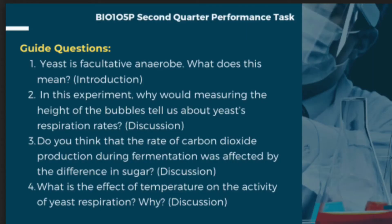Measuring the height of bubbles tells us about yeast respiration rates — that the yeast is undergoing fermentation — and it is really possible that fermentation can occur even without oxygen. The rate of carbon dioxide produced during fermentation was affected by the difference in sugar, because sugars have different fixed contents. That's why we used different types of sugar, like white and brown sugar, to see if there is a difference between them during fermentation. The effect of temperature on yeast respiration activity showed different heights of bubbles: no carbon dioxide production in cold temperatures because it inhibits the yeast, while in hot temperatures it became very active quickly but then died quickly because it was too hot. As temperature rises, the yeast produces more carbon dioxide until a point where production decreases, indicating that the yeast cells have been denatured as a result of the temperature rise.